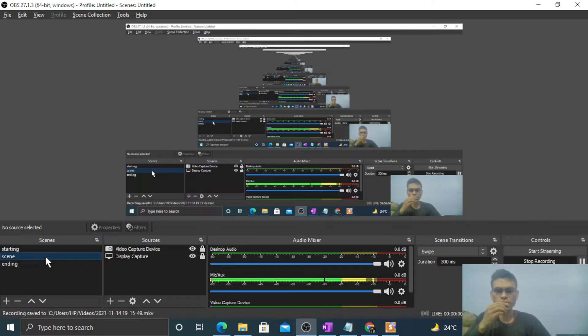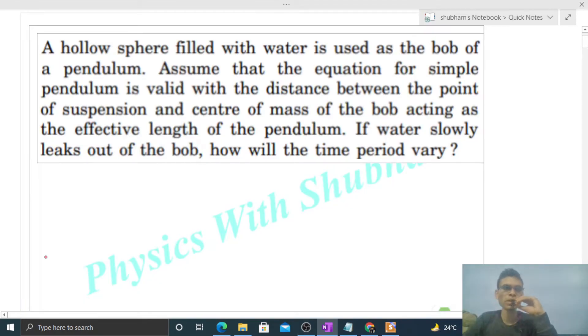Okay hi everyone, so today let's discuss this interesting problem. A hollow sphere filled with water is used as the bob of a pendulum. Assume that the equation for simple pendulum is valid with the distance between the point of suspension and center of mass of the bob acting as the effective length of the pendulum.